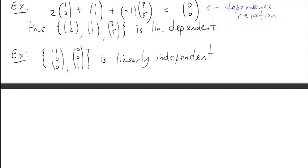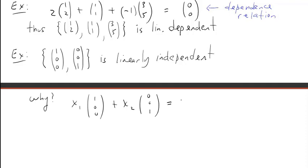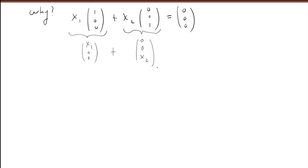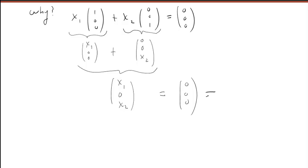Let's look at another example. This set of two vectors in R3 is linearly independent. If we form the equation x1 times the first vector plus x2 times the second vector, set that equal to 0, and see what that means for x1 and x2: the first scalar product equals the vector (x1, 0, 0), the second equals (0, 0, x2). Adding these gives the vector (x1, 0, x2), and setting that equal to 0 implies x1 = 0 and x2 = 0. Therefore, these vectors are linearly independent.